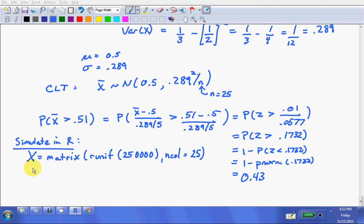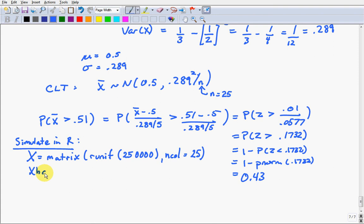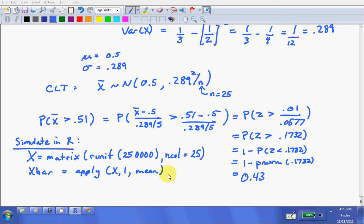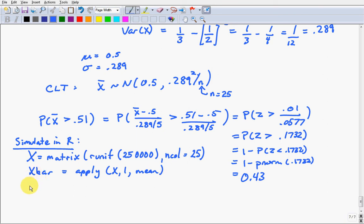So, we could say, for example, x bar equals apply to x1 mean. So, that'll calculate 25,000 averages. Actually, I should say that'll calculate 10,000 averages. And then we could count how many times or what percentage of times x bar is bigger than 51 cents. So, we could count the mean of x bar greater than 0.51. And when we do this in R, we get 0.4319.